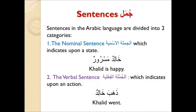Sentences in the Arabic language are divided into two categories. One, the nominal sentence (al-jumlatul-ismiyah), which indicates upon a state, such as khalidun-masroor, Khalid is happy. And two, the verbal sentence (al-jumlatul-fi'aliyah), which indicates upon an action, such as zahaba khalid, Khalid went.